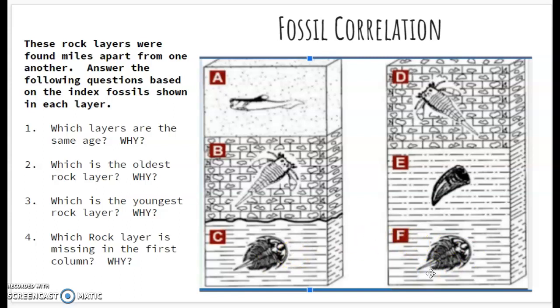The next question asks, which is the youngest rock layer? Now we're looking towards the top of the column, and we have two different rocks at the top of the column, letter A and letter D. Now we know that letter D and letter B are the same rock layer, and letter A is on top of letter B. So that makes letter A our youngest rock layer.